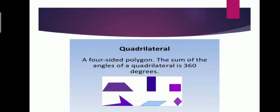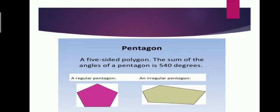After triangle, we have quadrilaterals. Quadrilaterals are also polygons — they are four-sided polygons. The sum of the angles of a quadrilateral is equal to 360 degrees. Examples of quadrilaterals include square, rectangle, trapezium, rhombus, and kite. We already discussed these in exercise 11B. The sum of the interior angles of a quadrilateral is equal to 360 degrees.